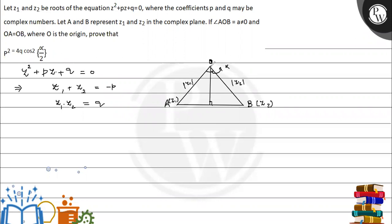When we draw the altitude, it also becomes the median. Let's call this point C. This portion will be alpha upon 2.